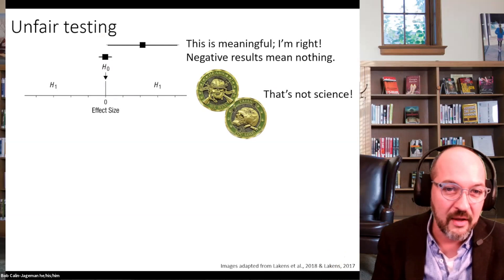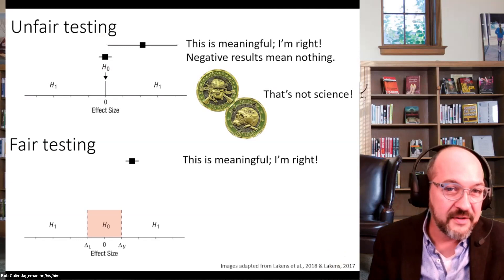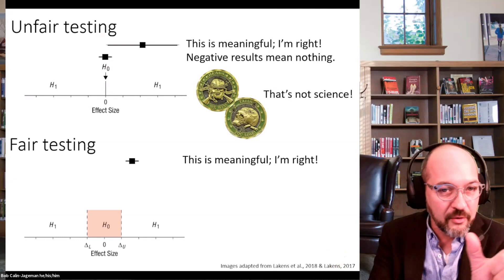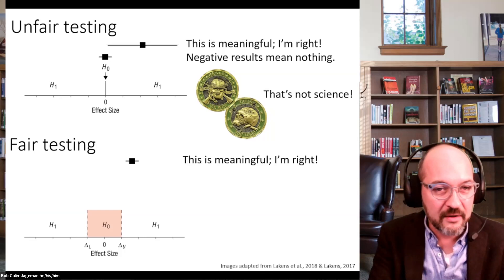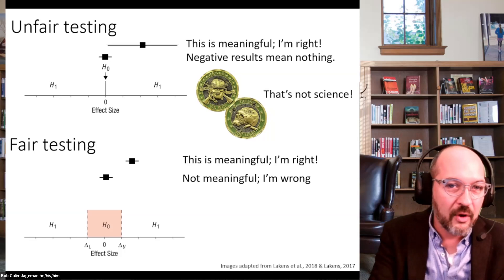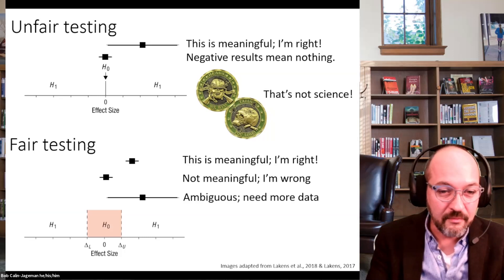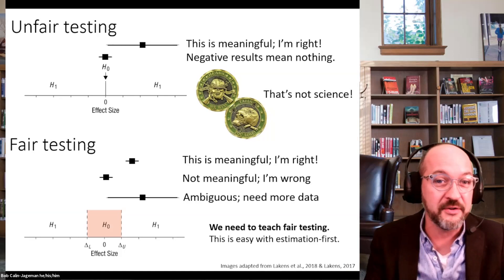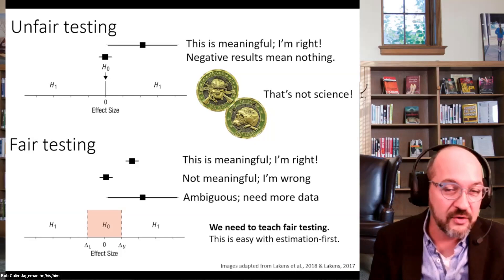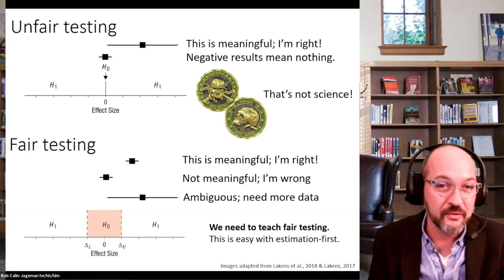A fair testing procedure can be done with null hypothesis testing: use an interval null and do equivalence and non-equivalence testing. If the whole effect with its confidence interval is outside the interval null, you've demonstrated evidence of a meaningful effect. If the whole confidence interval is inside, you've demonstrated evidence of a negligible effect. If it crosses the border — it's a maybe. That's a fair procedure that can give a yes, no, or maybe. But if our students learn estimation first, this is easy — just looking at a picture and judging whether we have a clearly negligible, clearly meaningful, or indeterminate case.